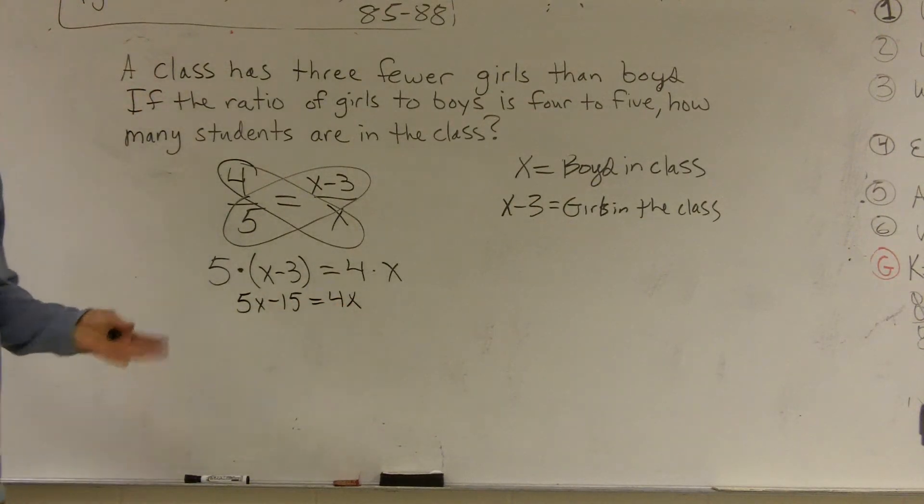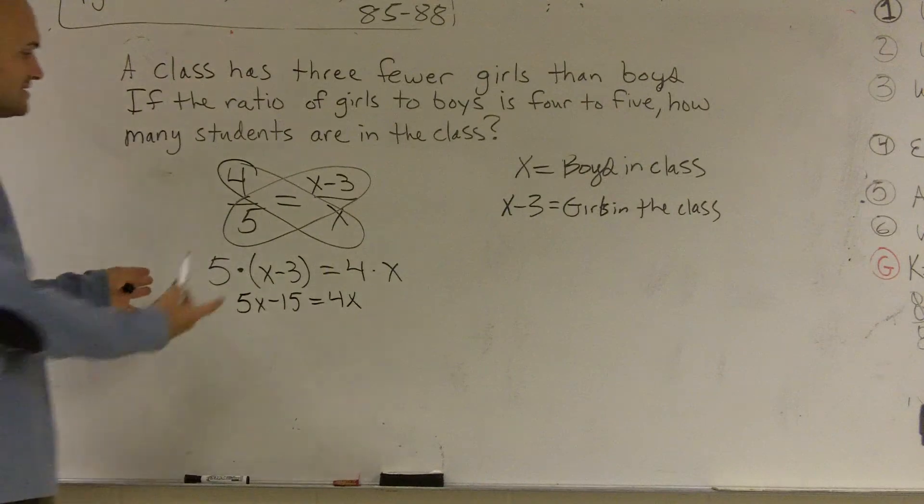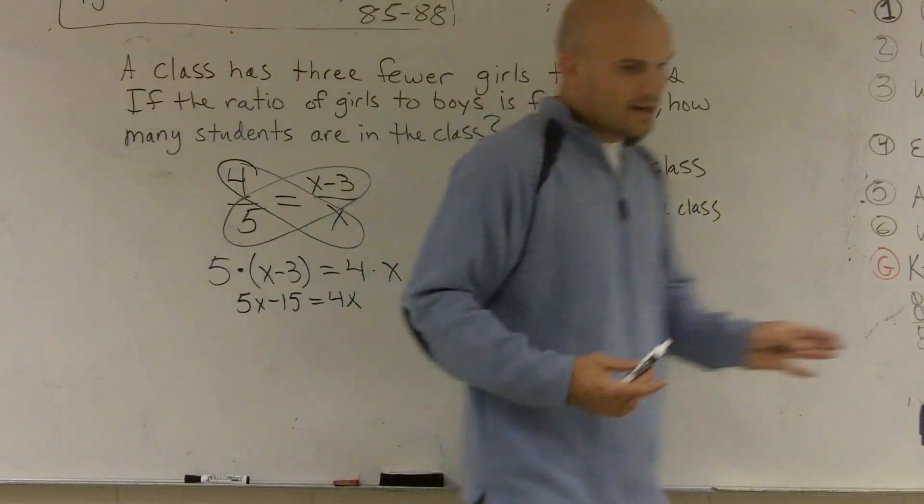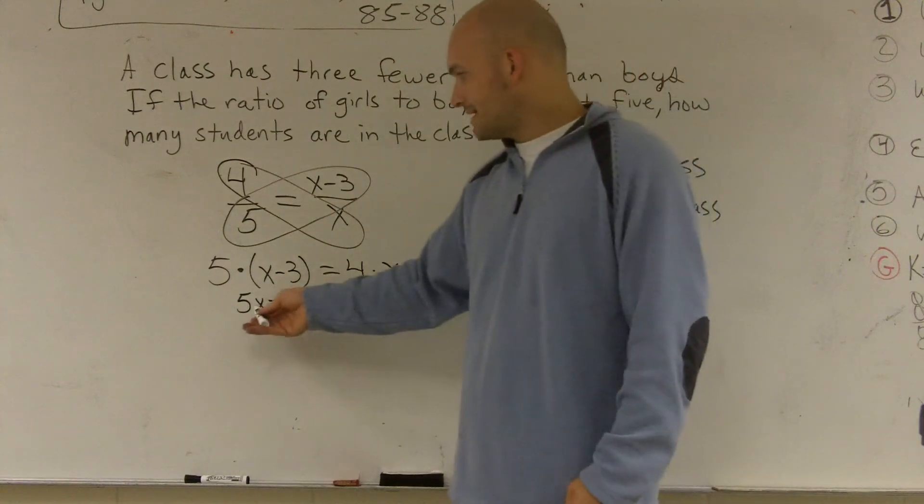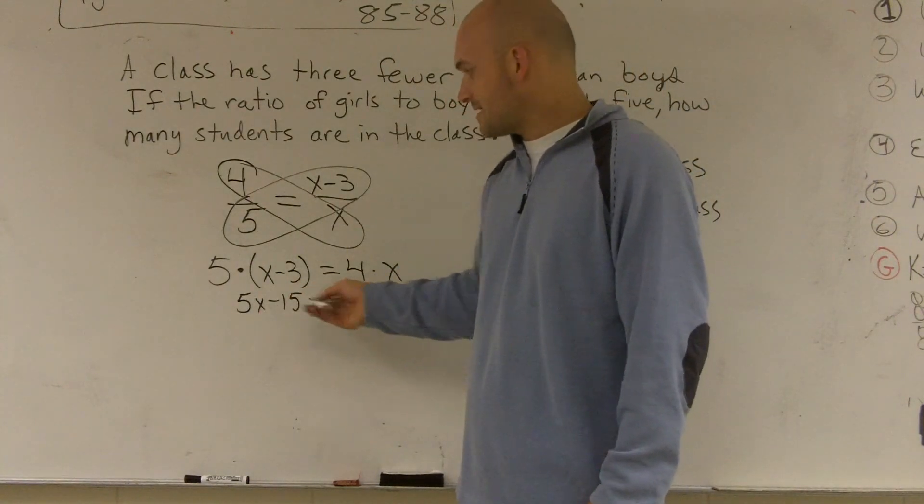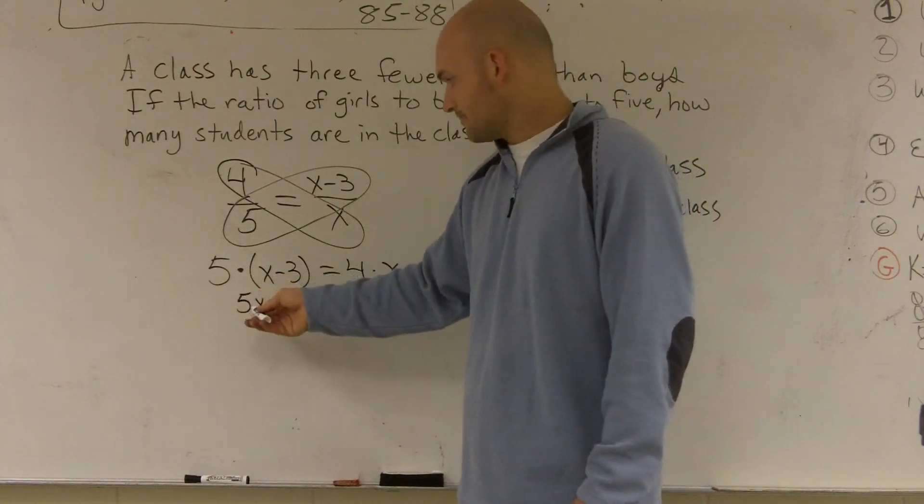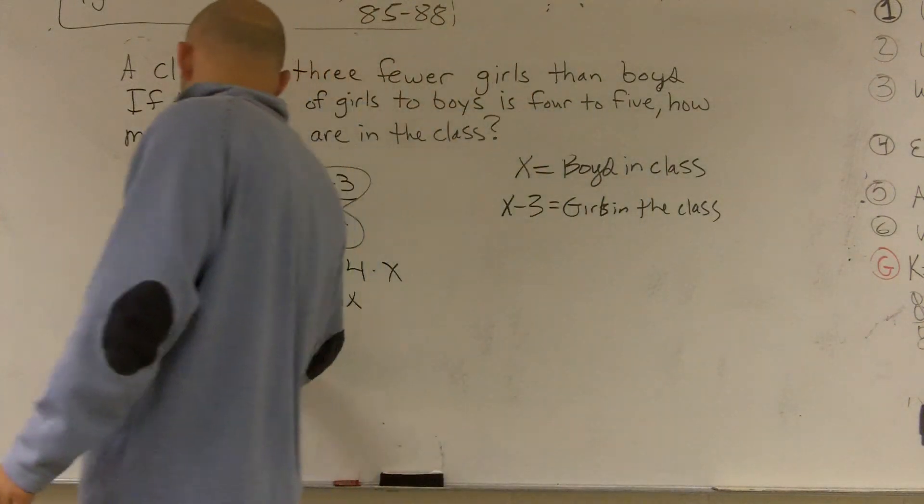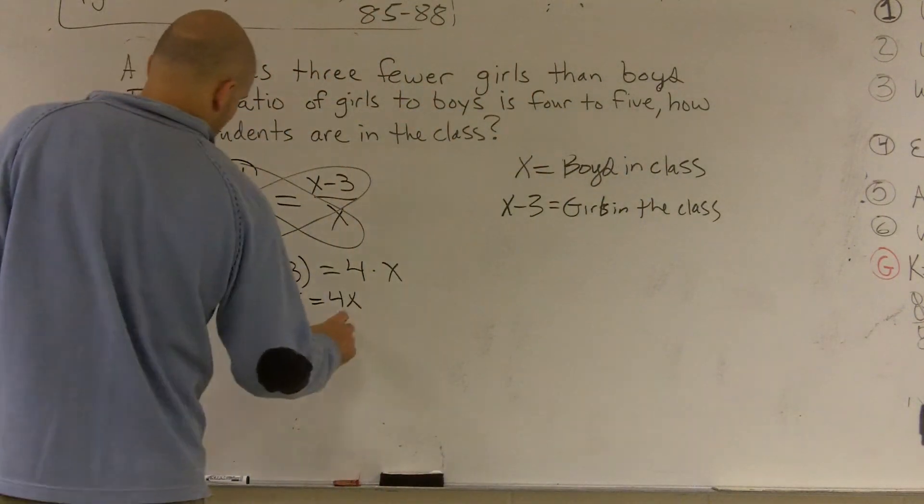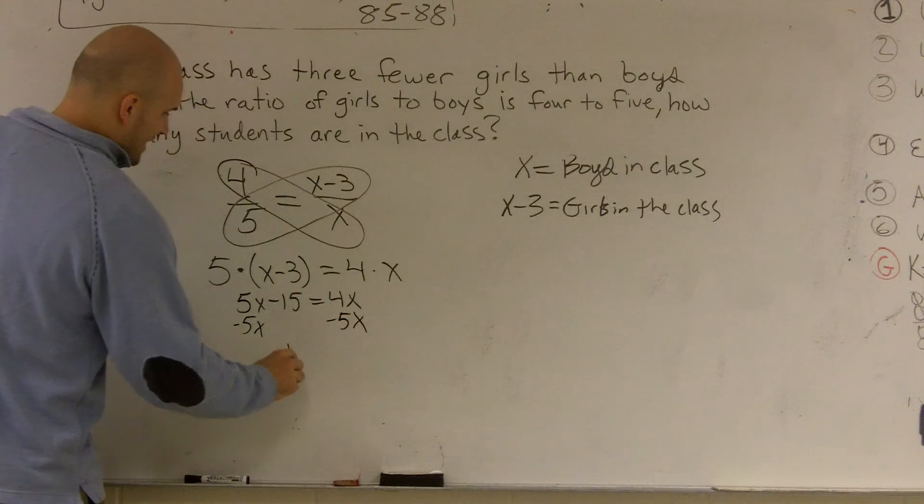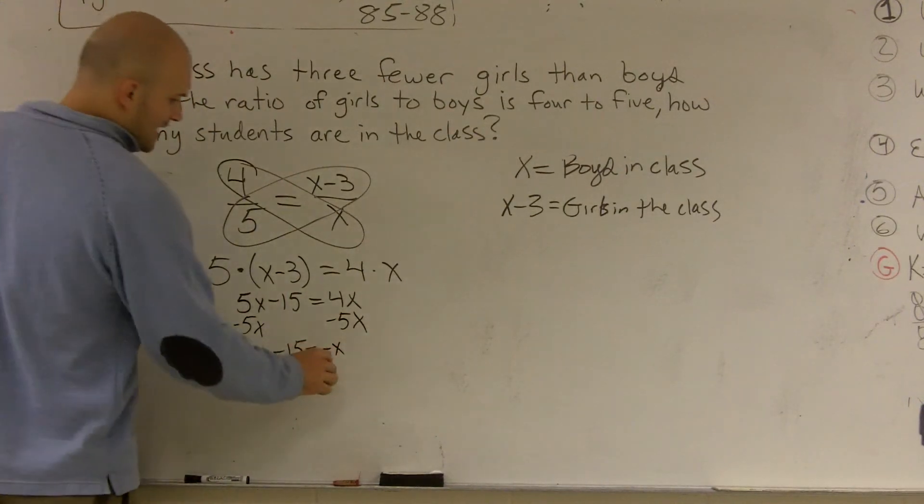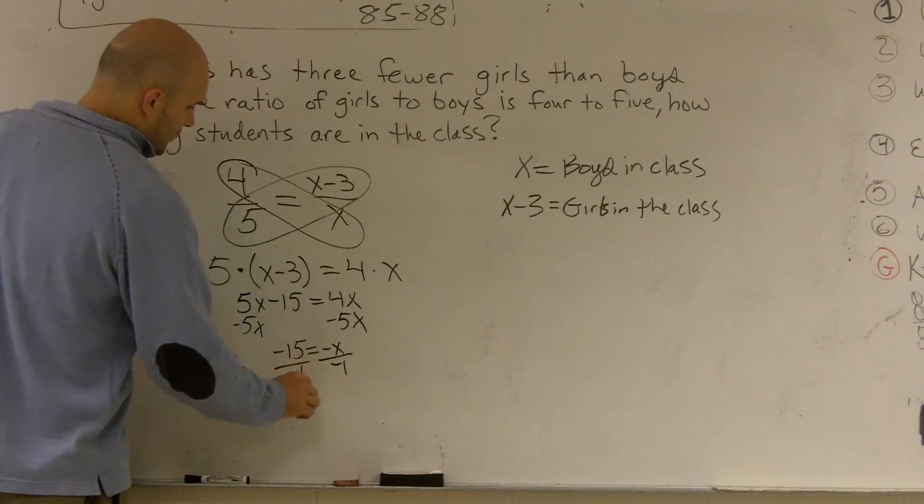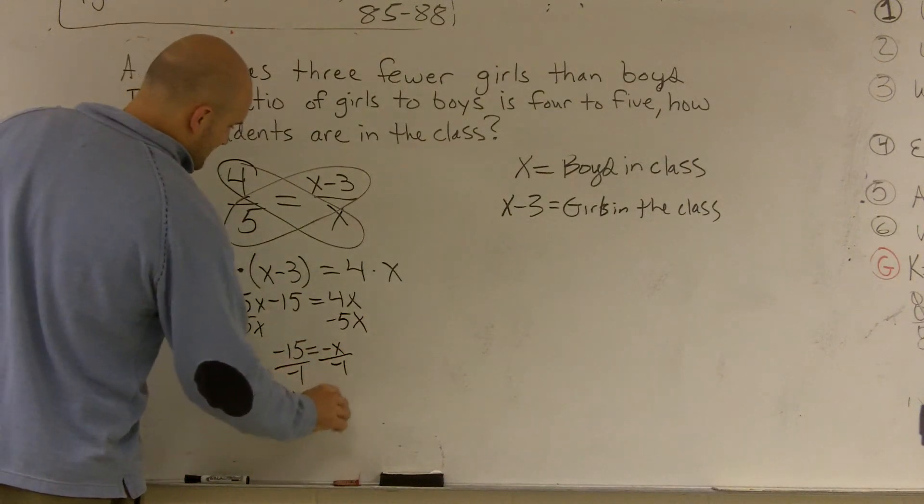Now I'm going to get my x. I need to isolate my x. Since I have an x on both sides, I need to get it to one side. So I'm going to get this x by itself. So I'm going to get rid of the x over here. And so I'll subtract the 5x. I get negative 15 equals a negative x. Now to get rid of that negative 1 in front, I divide by negative 1, and I get x equals 15.